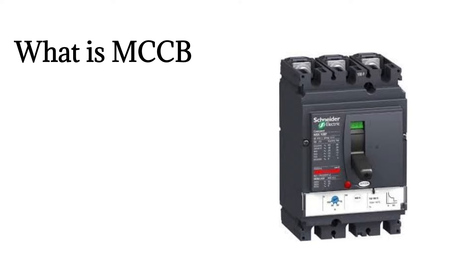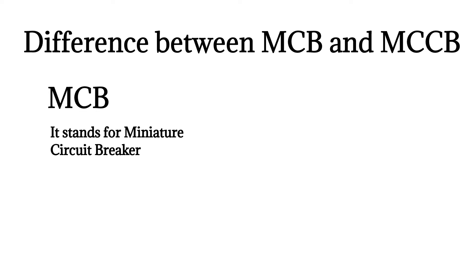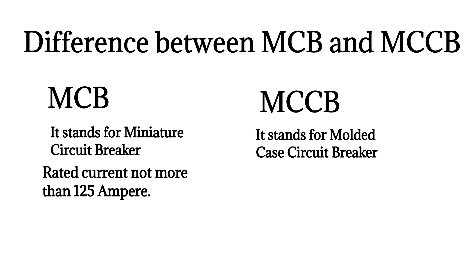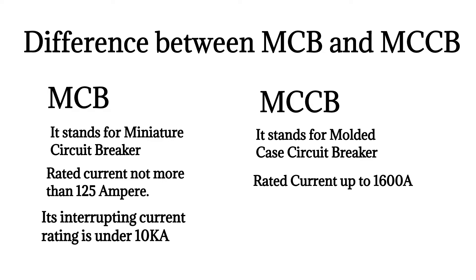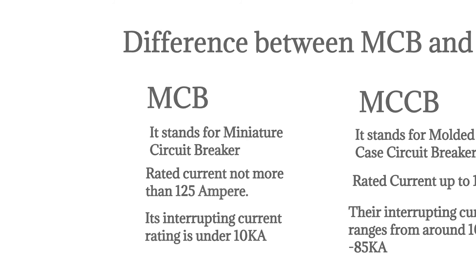MCCB offers adequate protection whenever an application requires discrimination, adjustable overload setting, or earth fault protection. Comparing MCB and MCCB: MCB stands for Miniature Circuit Breaker; MCCB stands for Molded Case Circuit Breaker. MCB has a rated current of not more than 125 amperes, while MCCB has a rated current up to 1600 A. The interrupting current rating of MCB is under 10 kilo-amperes, whereas MCCB interrupting current ranges from around 10 kilo-amperes to 85 kilo-amperes.